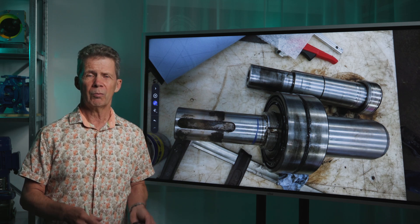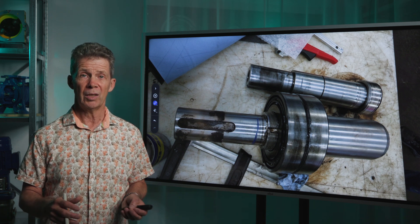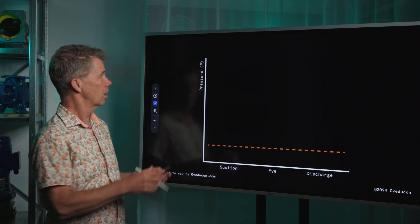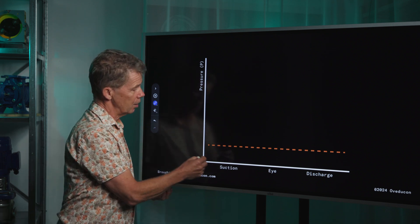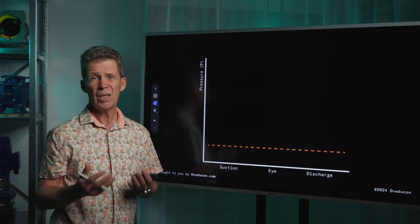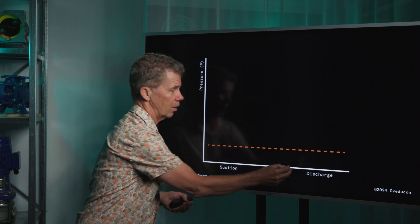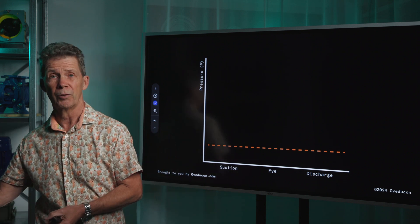We get cavitation because of a pressure drop of the pump medium in the impeller. There is a suction pressure. The medium is coming in the impeller. It enters the impeller eye and it will leave the impeller from the discharge side of the impeller.